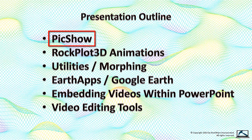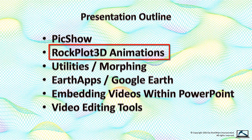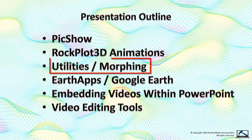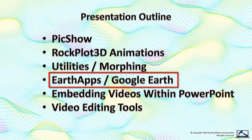We'll start by showing a simple utility called PicShow that creates videos from individual images. Next, we'll focus on the RockPlot 3D program and three different ways to create movies. Then, I'll move on to the utilities for making transitional movies of time-based data by morphing grids and solids. Next, we'll touch on some of the Earth app's flyovers and using the Movie Maker within Google Earth.